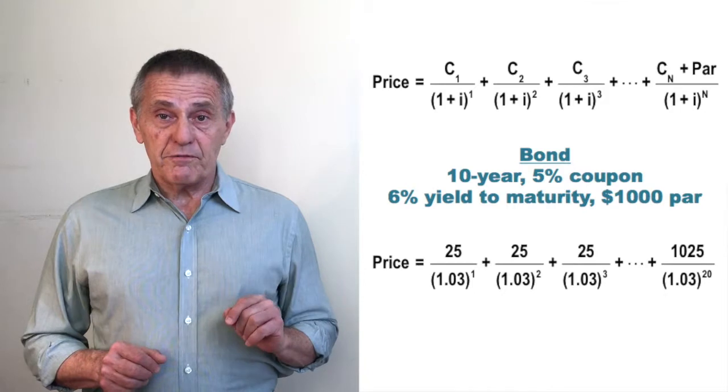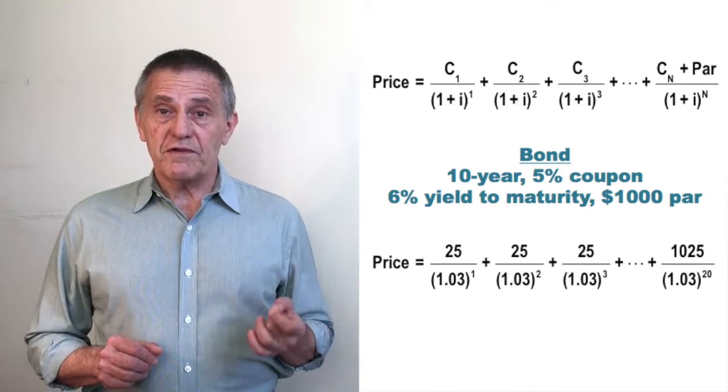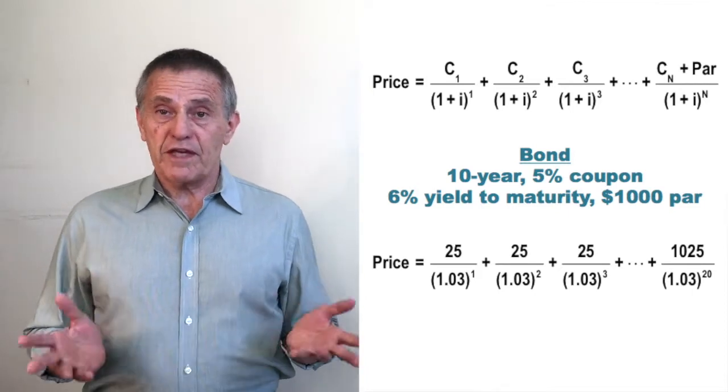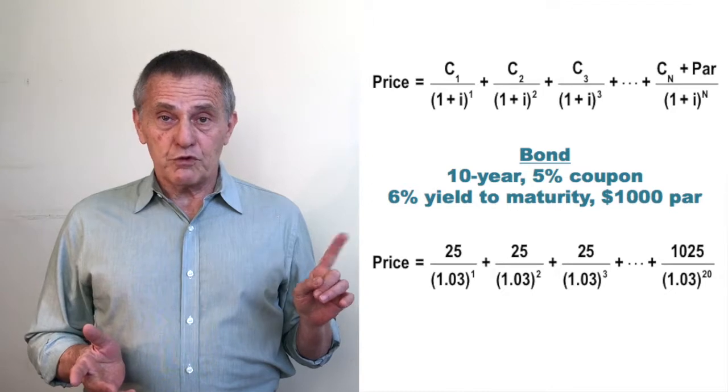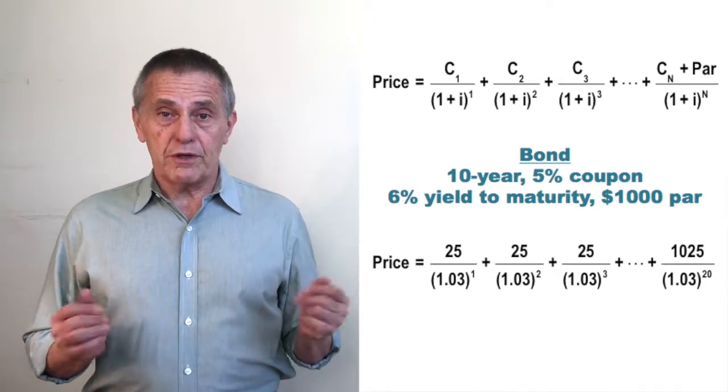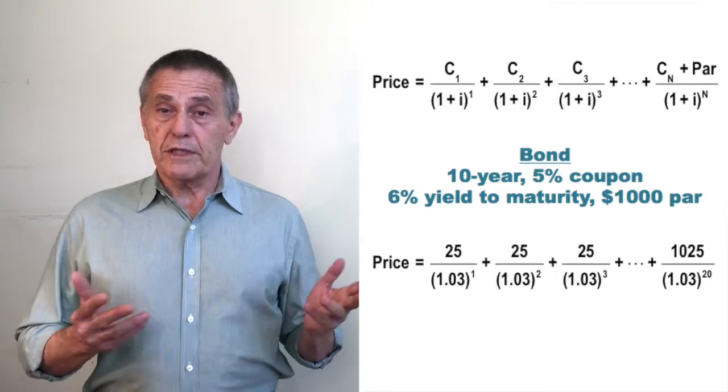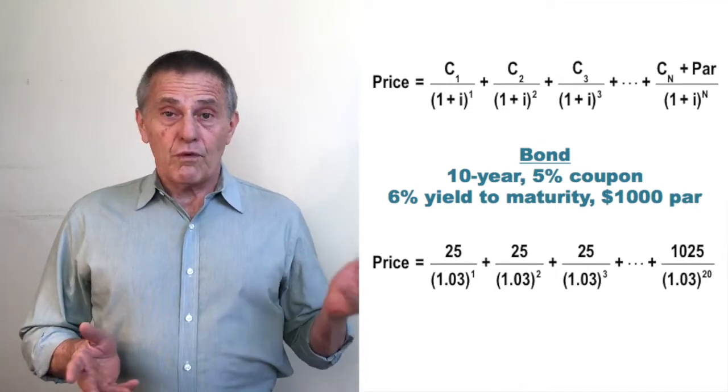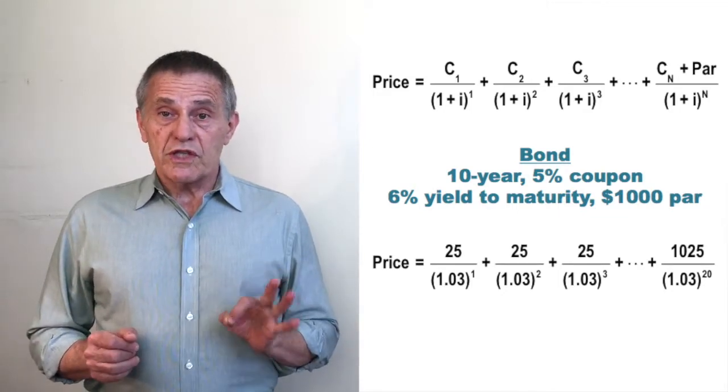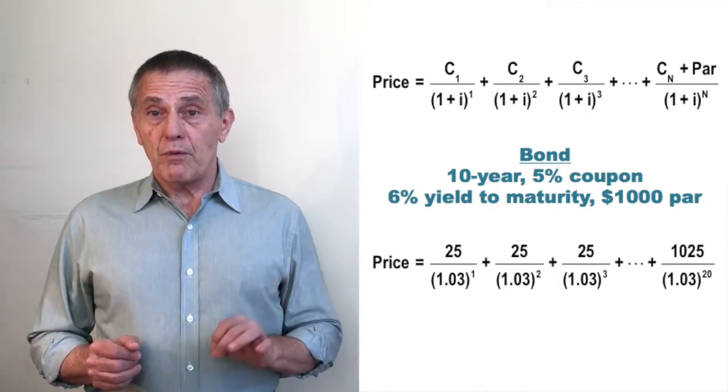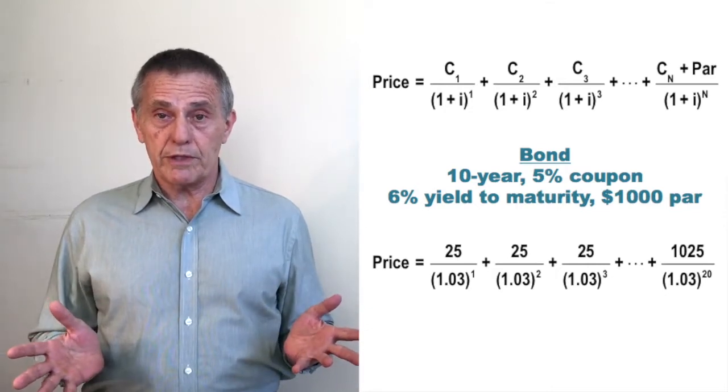So the way you get the price of a bond is literally by finding the present value of each of the individual cash flows and summing the present value of the cash flows to get the price. The first $25 coupon is divided by 1.03 to the first power. The second $25 coupon is divided by 1.03 to the second power. And so forth and so on, all the way until the cash flow due at maturity, which is the $1,025 divided by 1.03 to the 20th, because of course in 10 years there's 20 semi-annual periods.